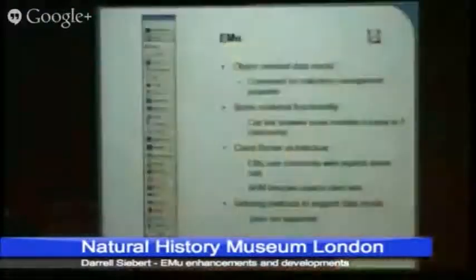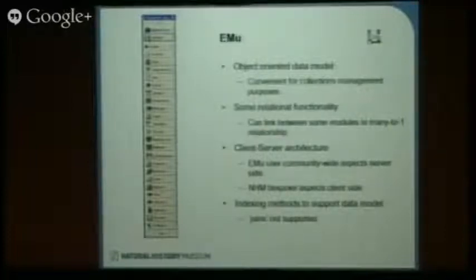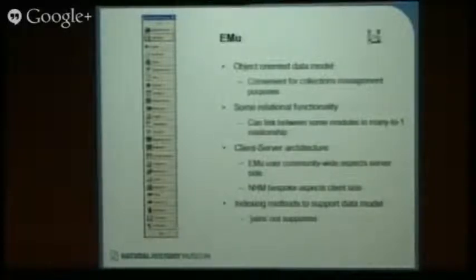The first thing to remember is that it's an object-oriented database, which is quite convenient for collection management purposes. On the left-hand side of that slide, there's a whole list of buttons on something we call a command center, and each one of those represents a table. Each record in there is an object, but it is a whole record. For instance, there's one that says sites — that's where we keep our geographic information. A single record in there would have all of the information about a particular locality. It's highly atomized, but not divided up into a whole bunch of additional tables.